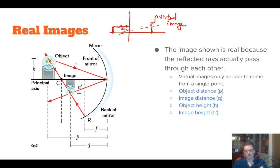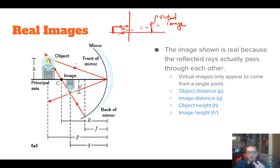Concave and convex mirrors can form virtual or real images depending on where the object is — whether it's close to the mirror, far apart, or between the center and the focal point. Virtual images are formed by rays that don't actually exist. Real images are formed by rays that are real — they're right there, not projections by our brain on the other side. So this creates a real image.